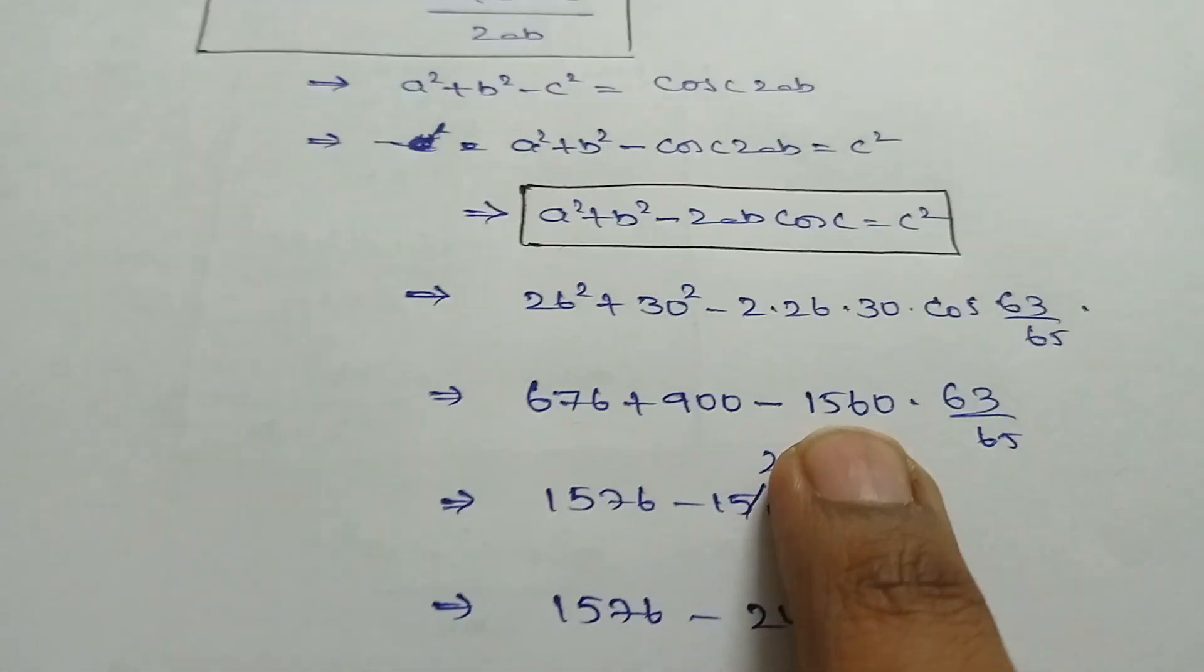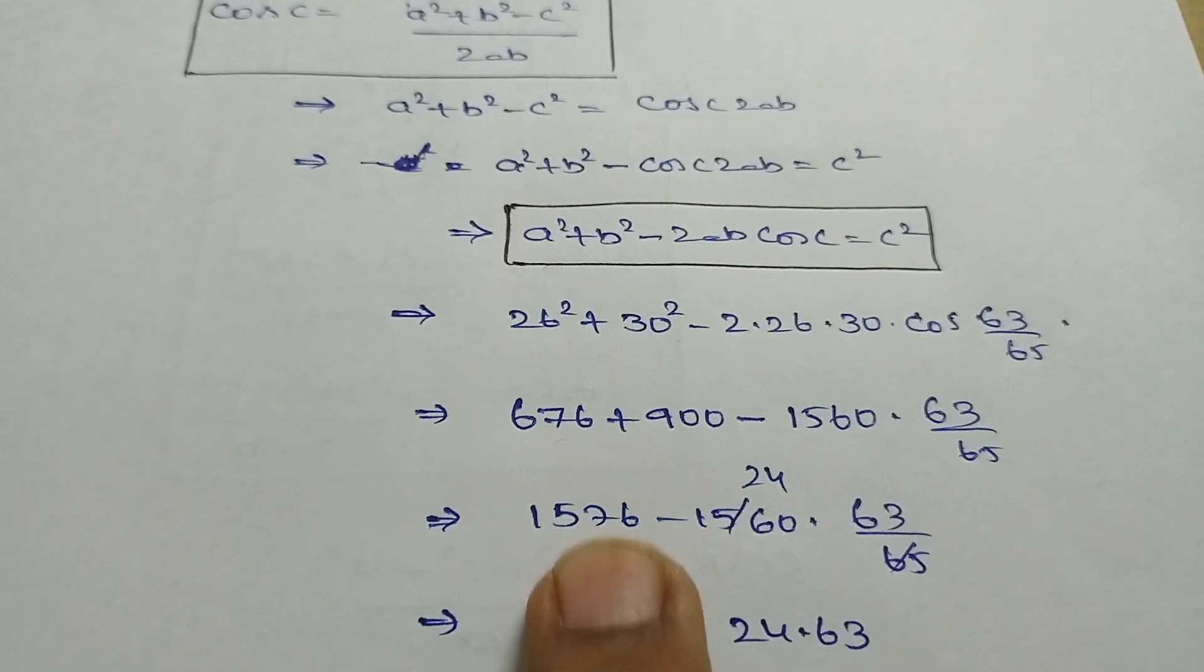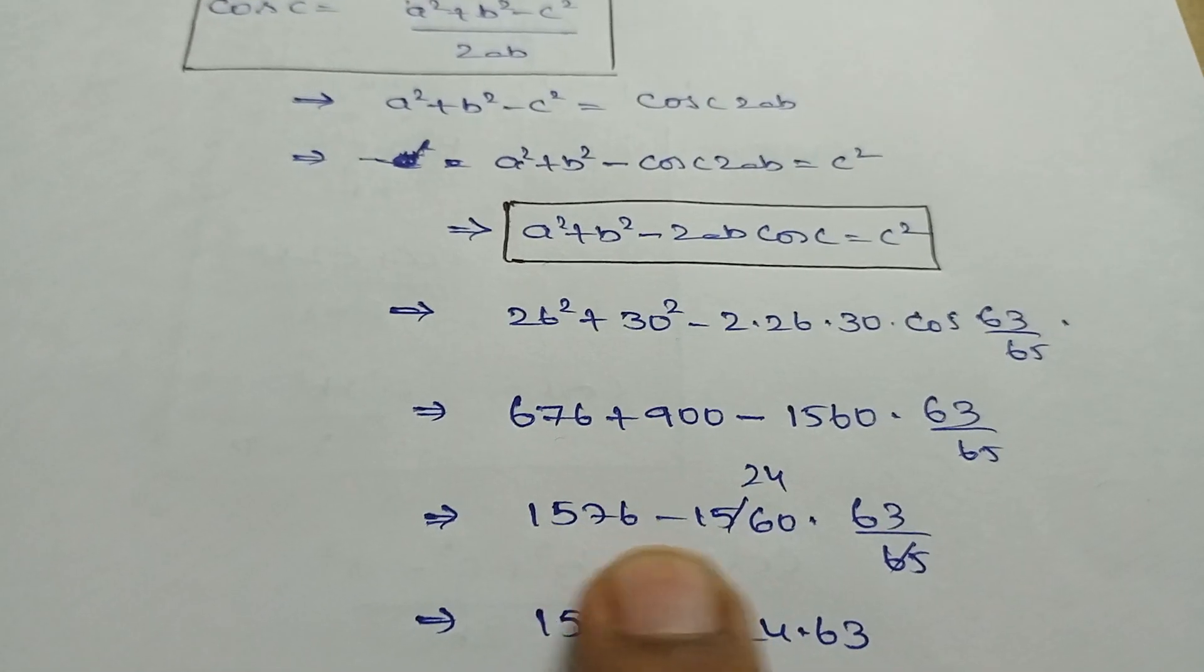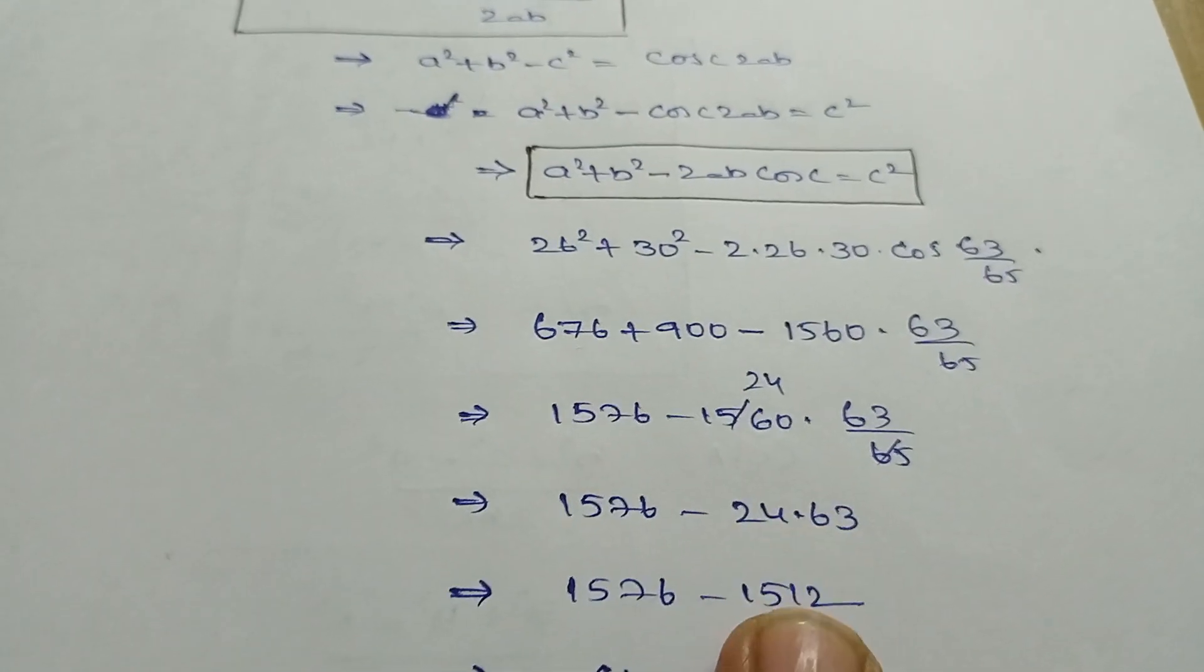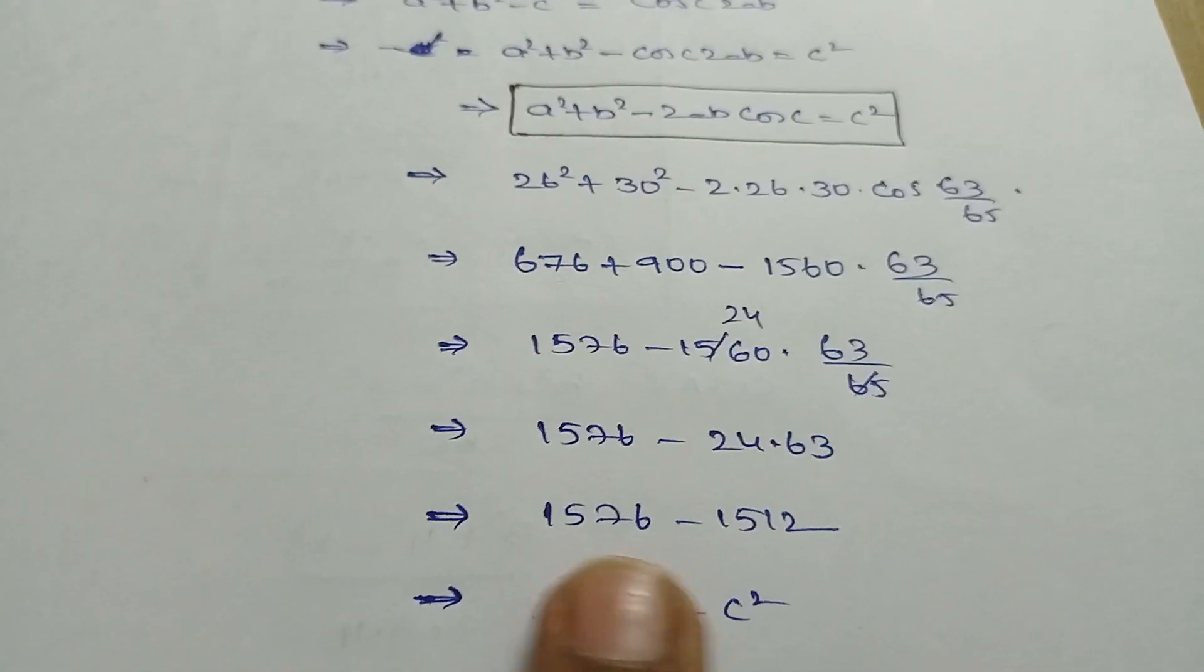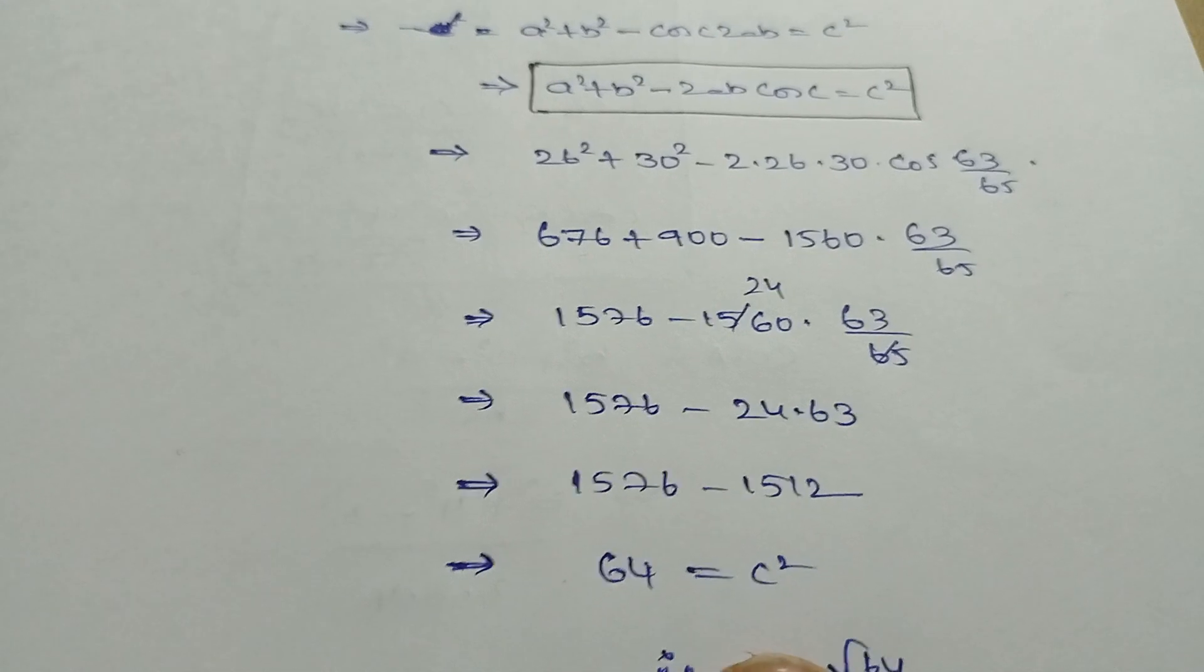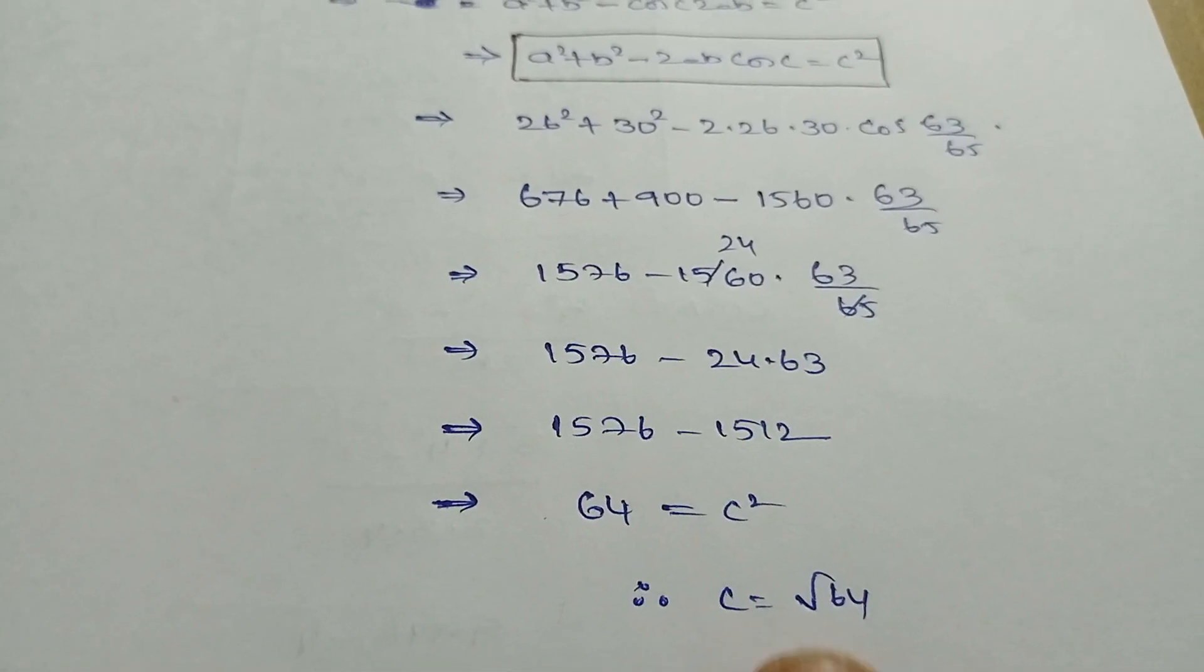This total sum is 1576 minus 1512. If you subtract these two you will get 64. Therefore, this square goes to root of this value, therefore c value equals 8.